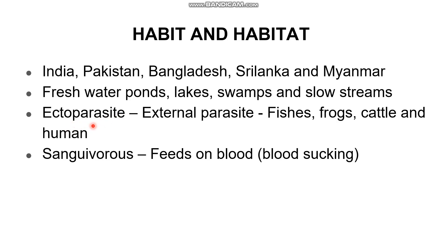The leech is a parasite that feeds on other living organisms. It lives on warm-blooded hosts: fishes, frogs, cattle, and humans. It is an ectoparasite — an external parasite that lives on the outside of the host. It is sanguivorous, meaning it feeds on blood — when it sticks to a host, it sucks blood. So it differs from herbivorous (feeds on plants) and carnivorous (flesh-eating) organisms.